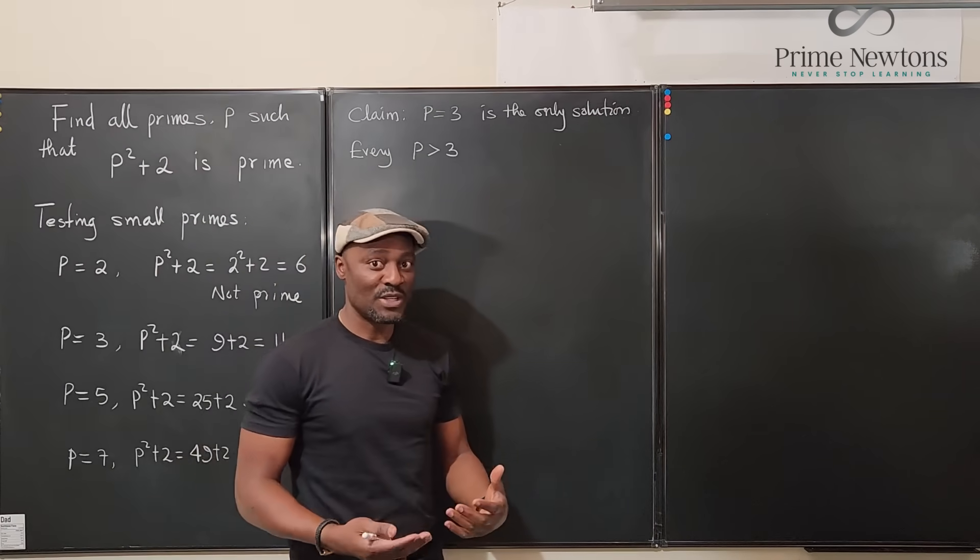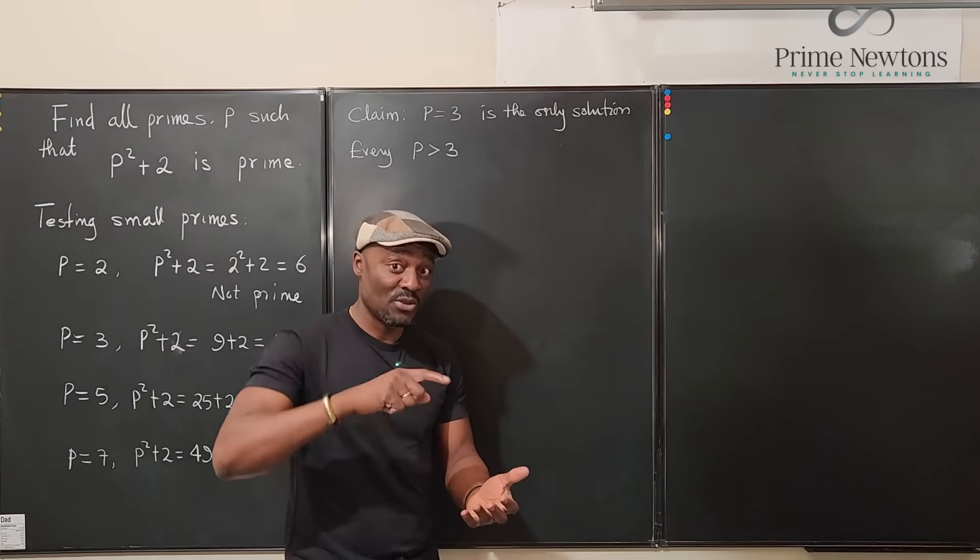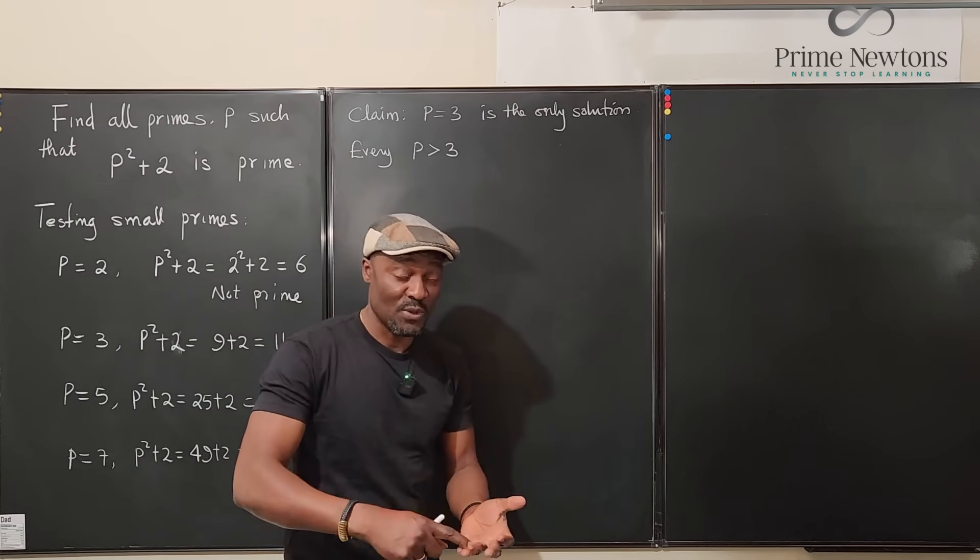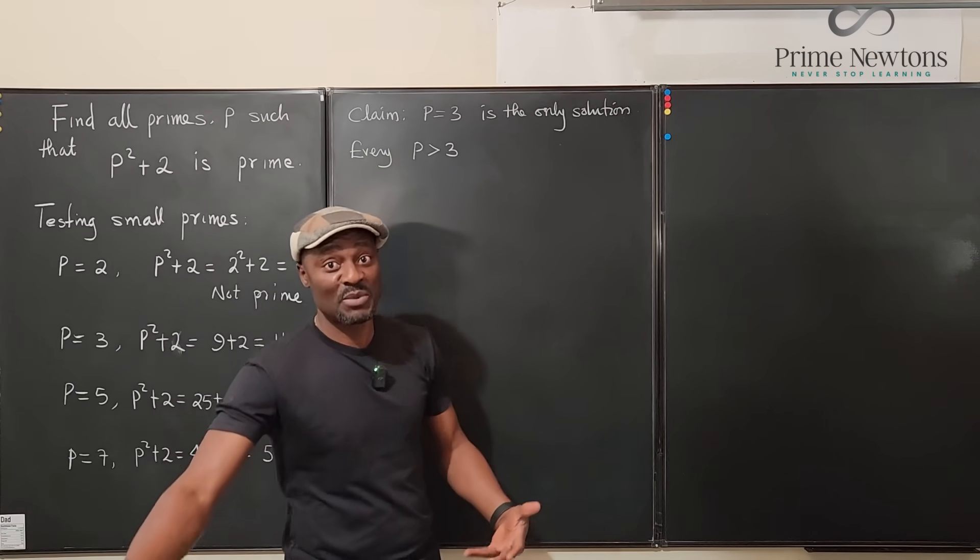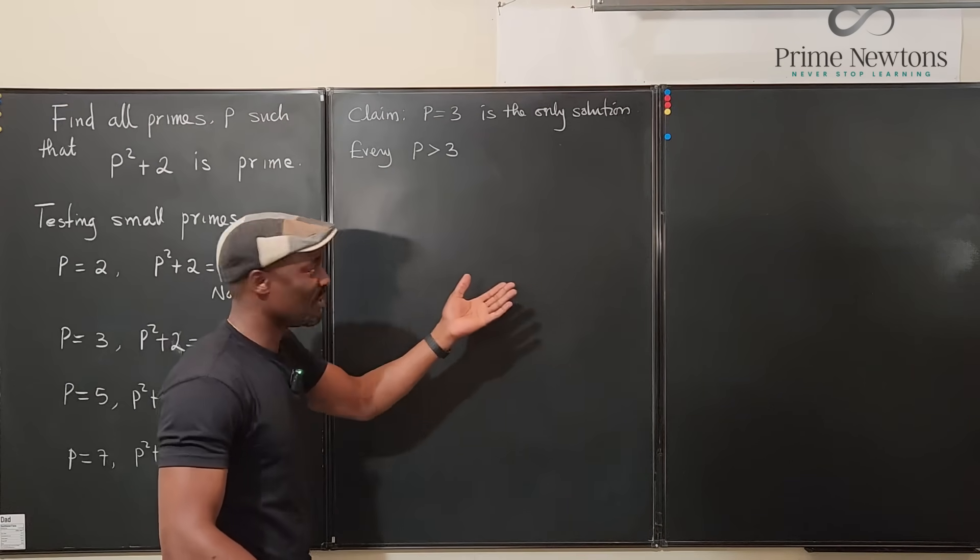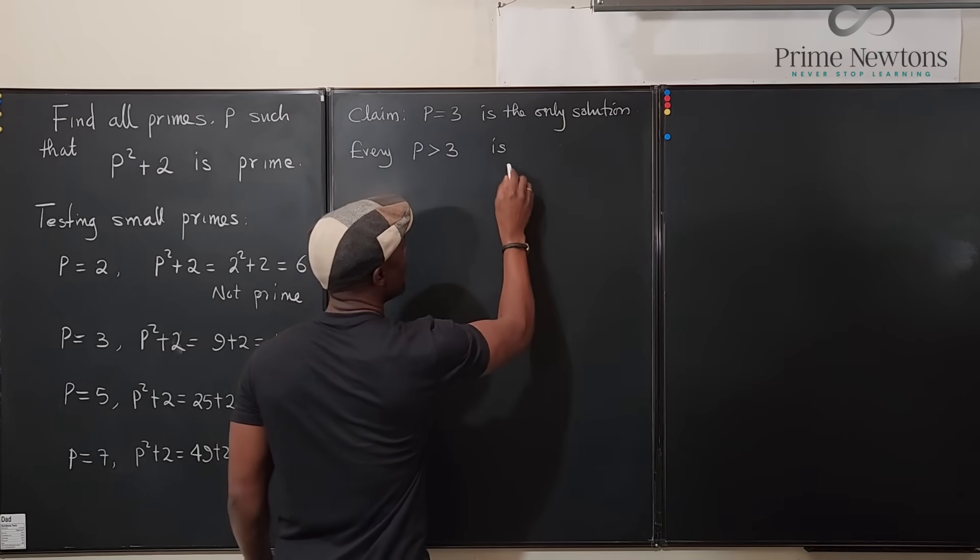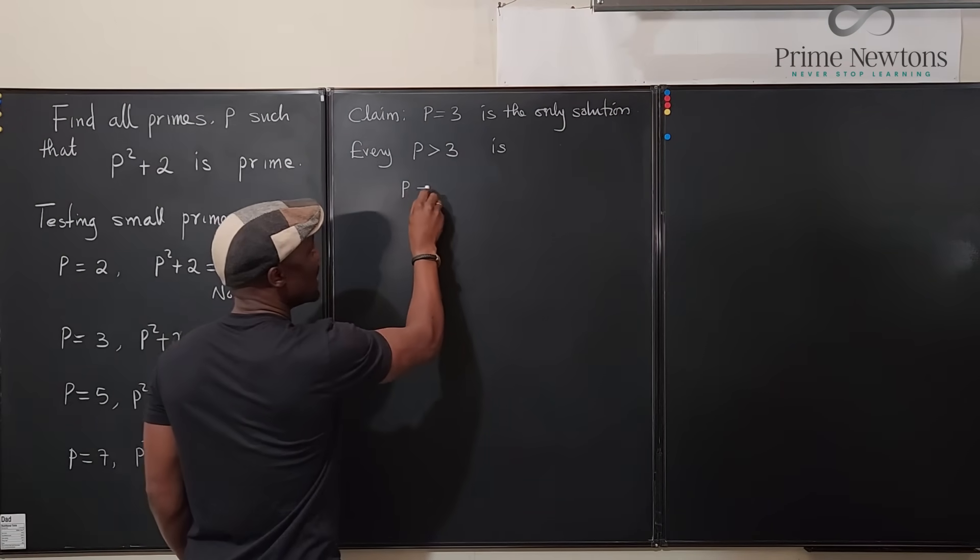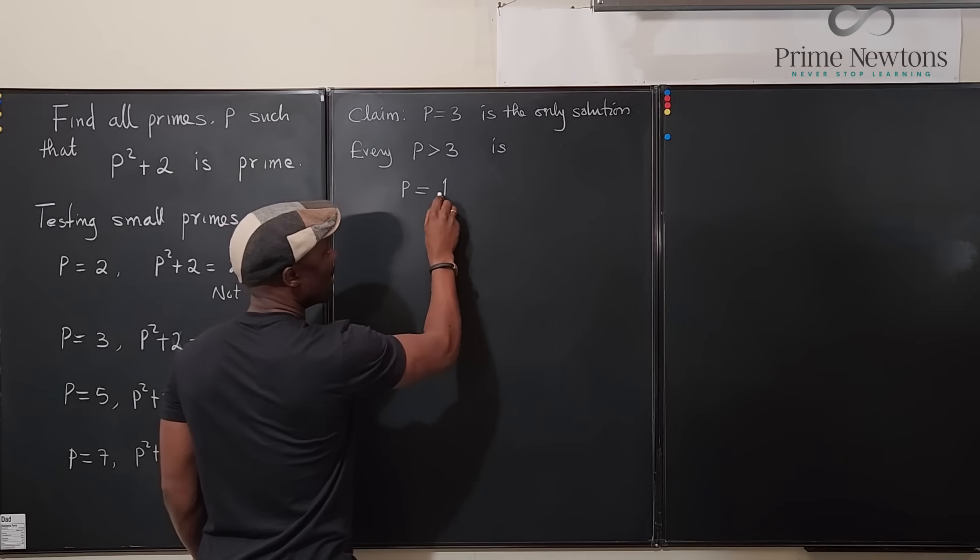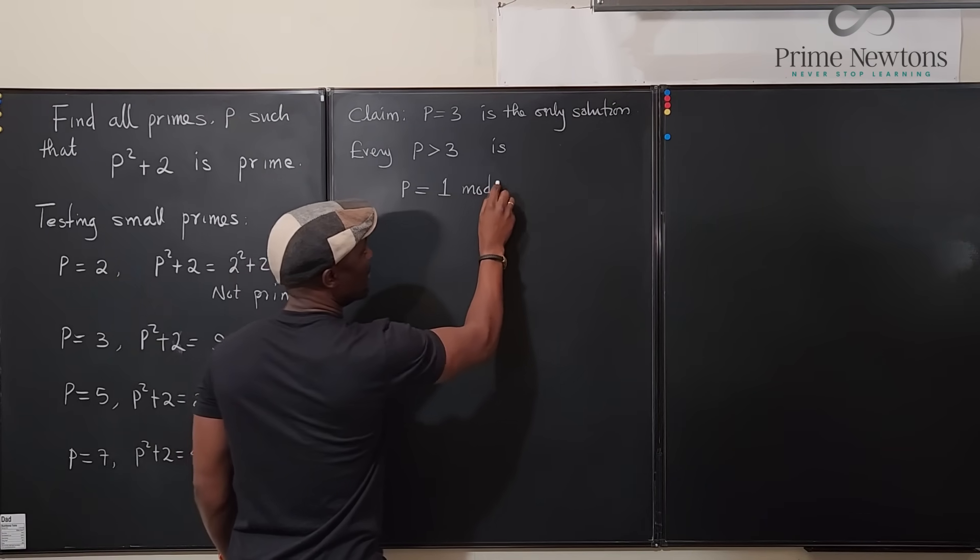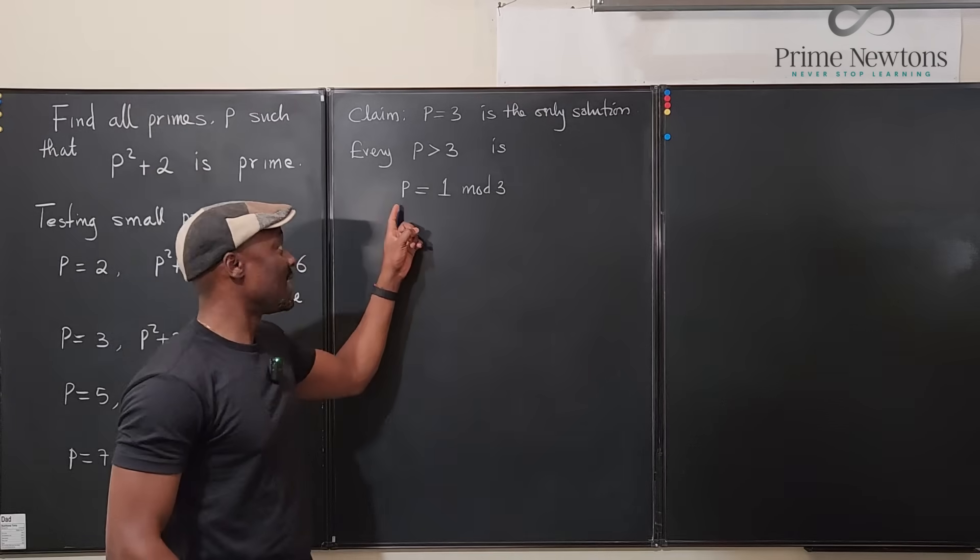So the prime number when you divide it by 3 will leave a remainder of 1 or a remainder of 2. Those are the only two options. It cannot be a remainder of 3, otherwise it would be divisible by it.